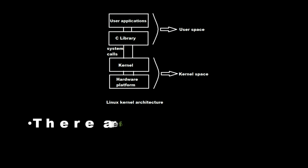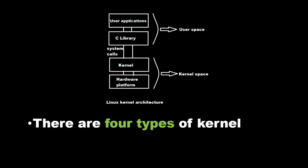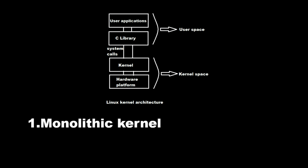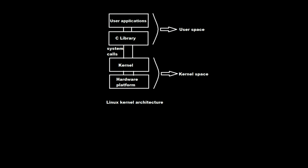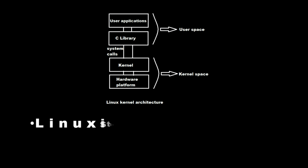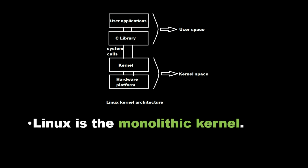There are four types of kernel: monolithic kernel, microkernel, exokernel, and hybrid or modified microkernel. Linux is a monolithic kernel.